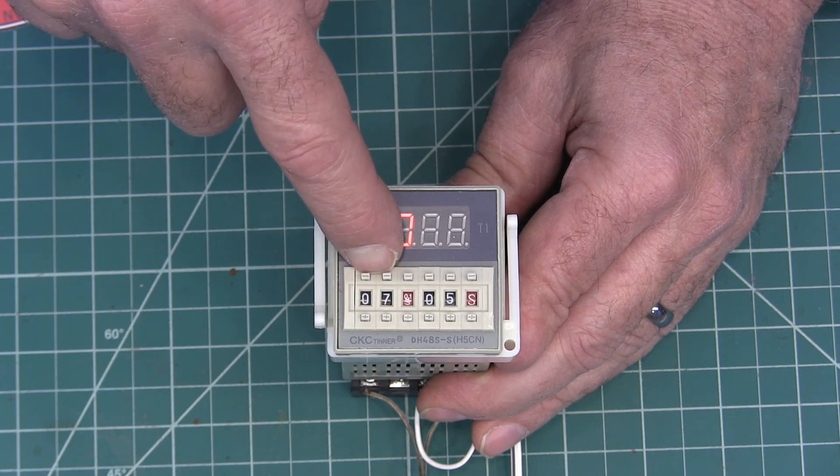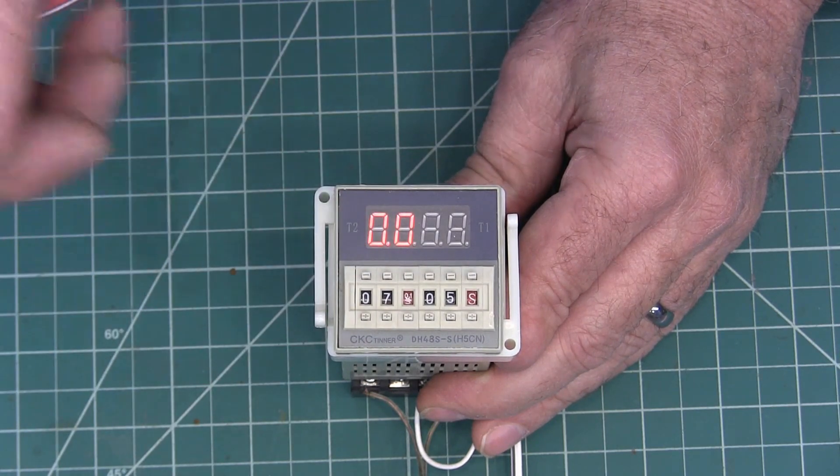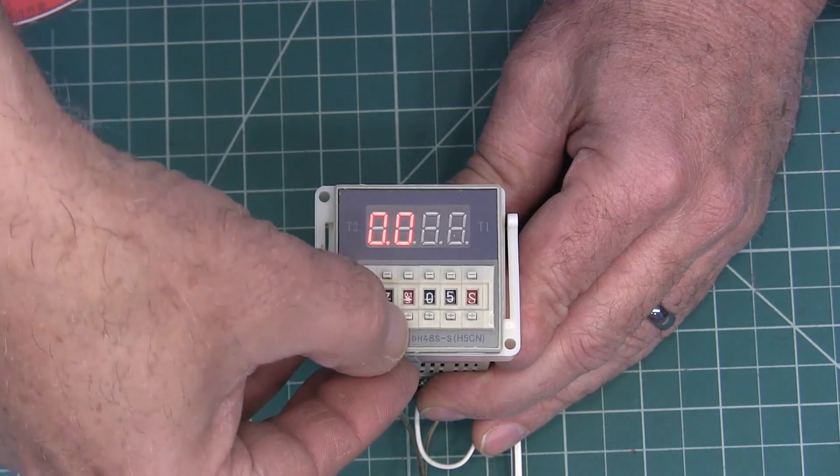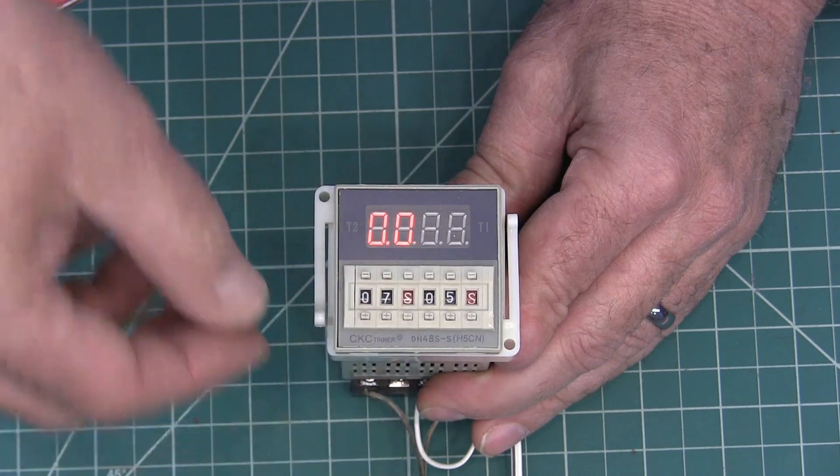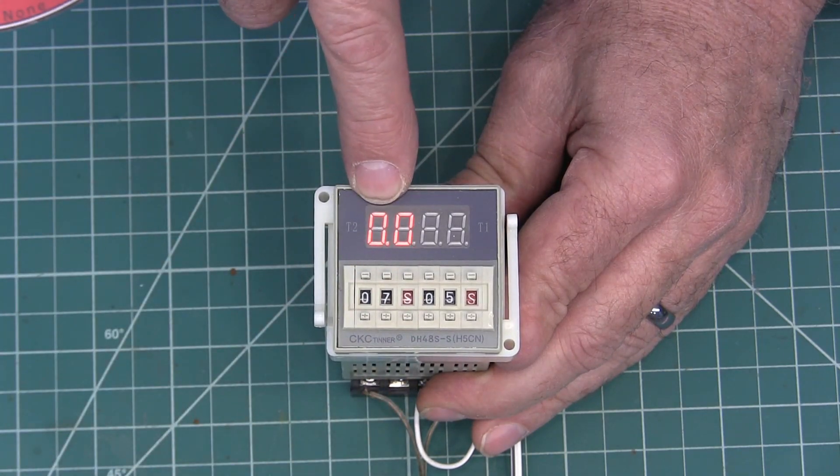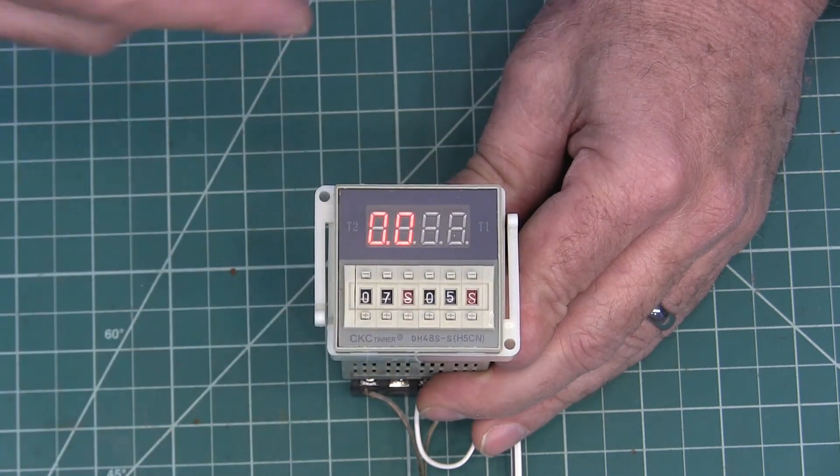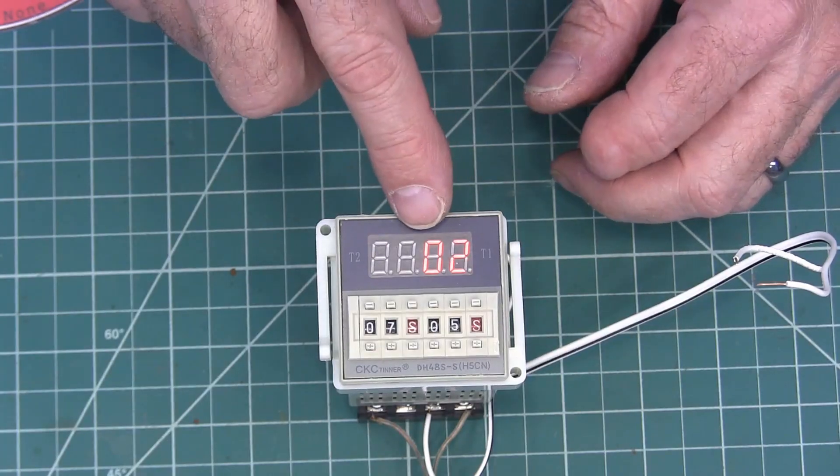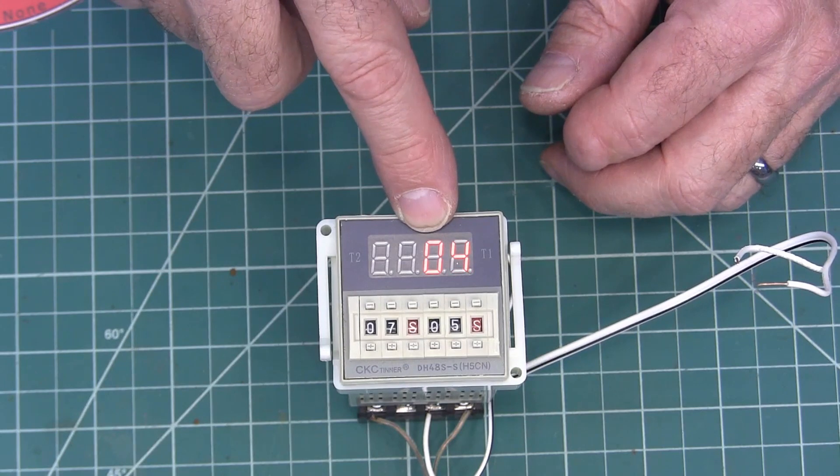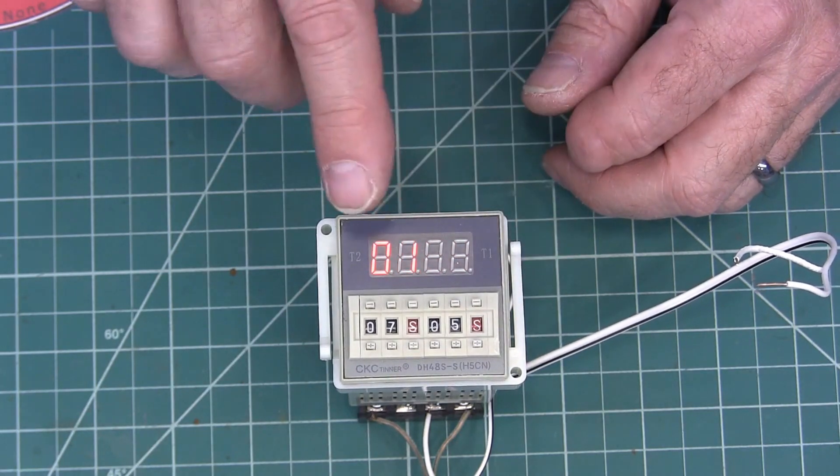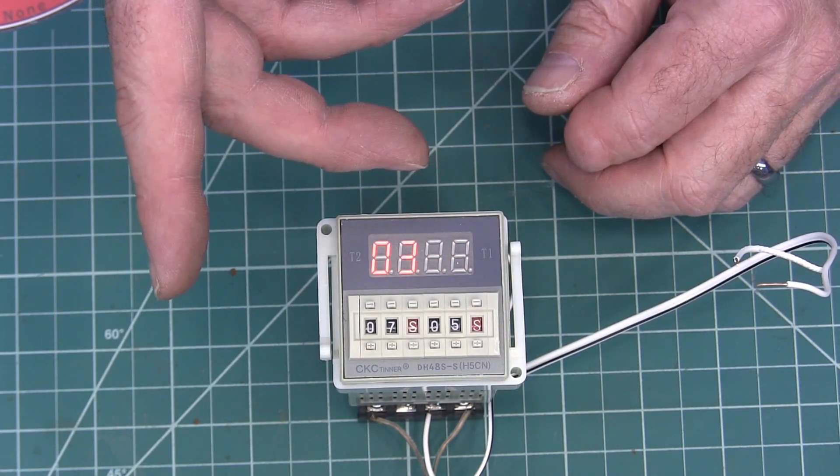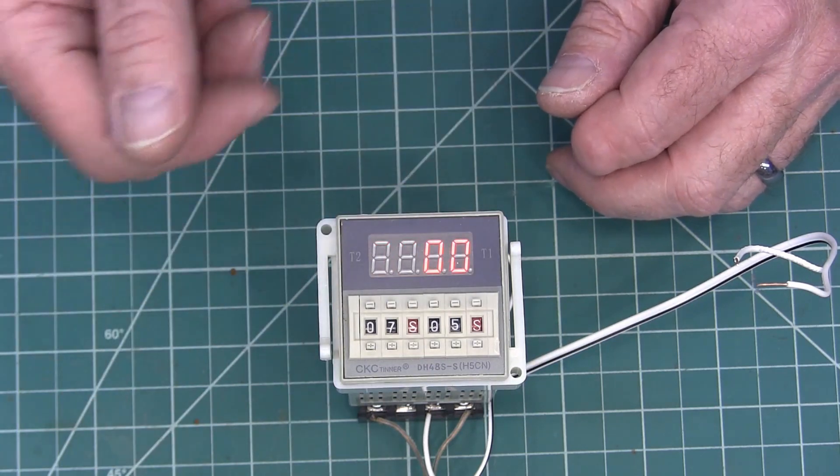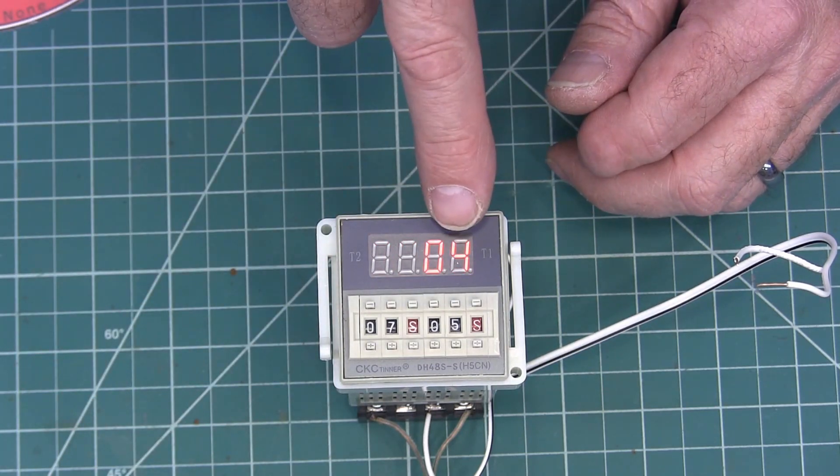Once you change this you have to reset it, so let me unplug it and plug it back in. As soon as it comes on it starts counting, and once it gets to what you've preset, it flips the state of the relay. If you're using the normally open or normally closed contact, it flips it to the other side of the relay.